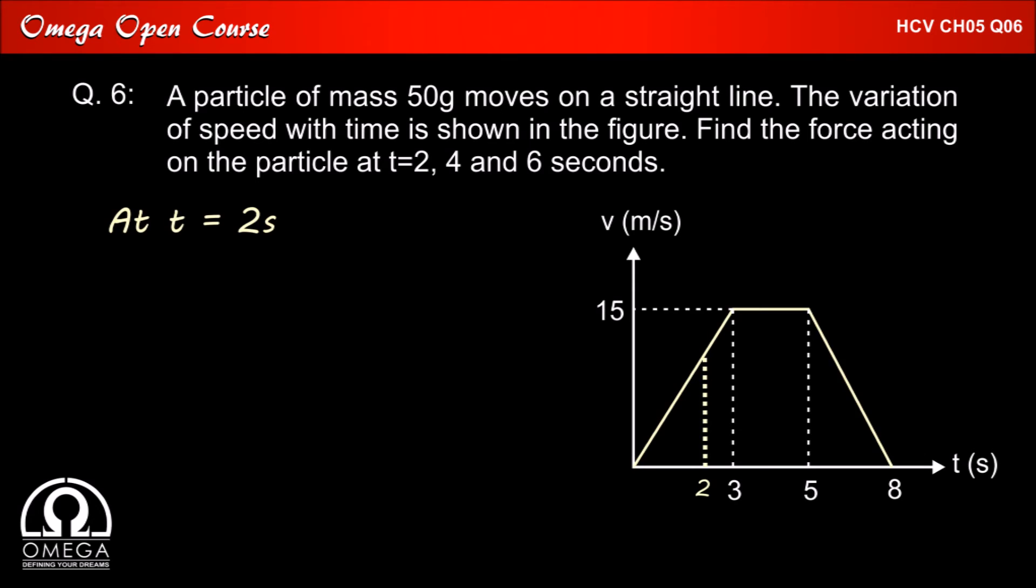So if we have to find force at t equals 2 seconds, we need to find the acceleration at t equals 2 seconds. The acceleration at t equals 2 seconds can be found by finding the slope at t equals 2 seconds. As we can see in the graph,